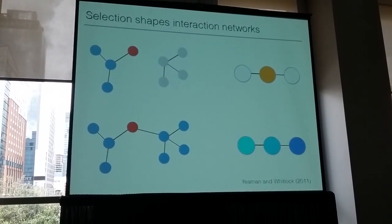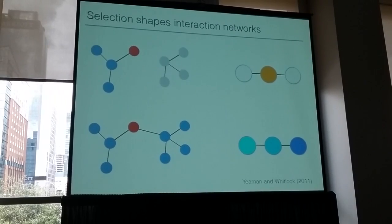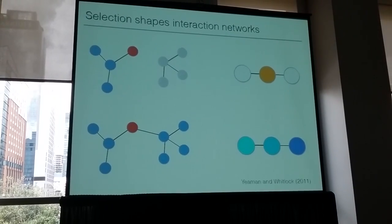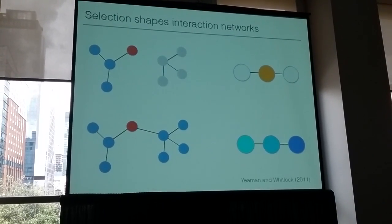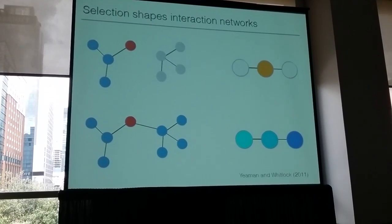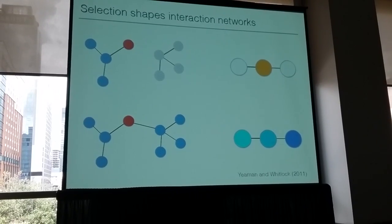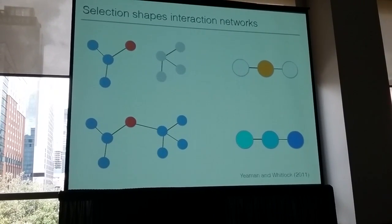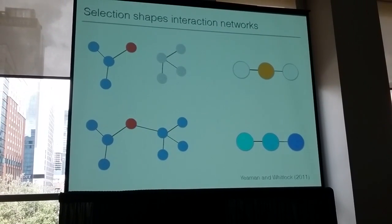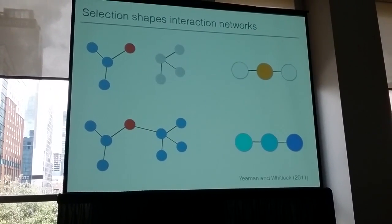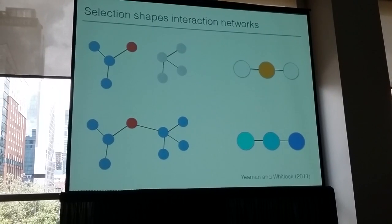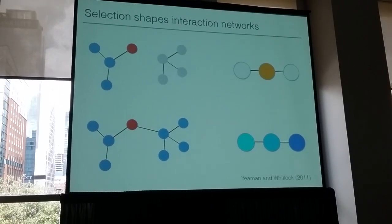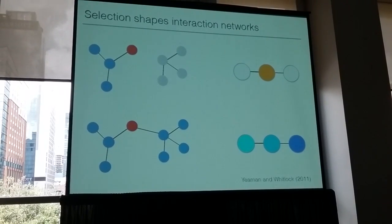That tells us two things. One, we probably need to account for variability in gene interaction networks when thinking about how selection is going to change phenotypes and populations. But this might also give us a lens into what types of selection pressures are acting in different populations or for different traits.